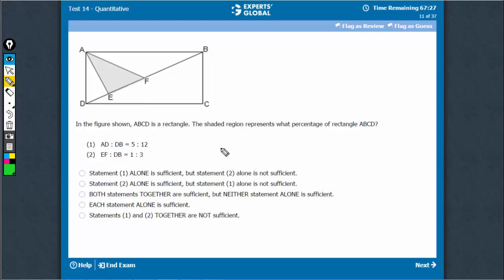The answer needs to be in the form of a percentage. Now, AD upon DB is 5 upon 12. If this is 5, this entire thing is 12. It's a rectangle, so 5, 12.